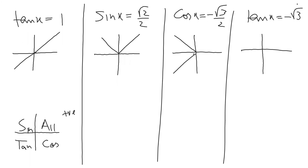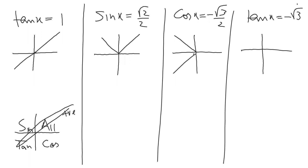So I'll make one line here and one line here. Now tan is negative — you can see this negative sign. Tan is positive in the first and third, and negative in the second and fourth. So I will make a line here and line here.